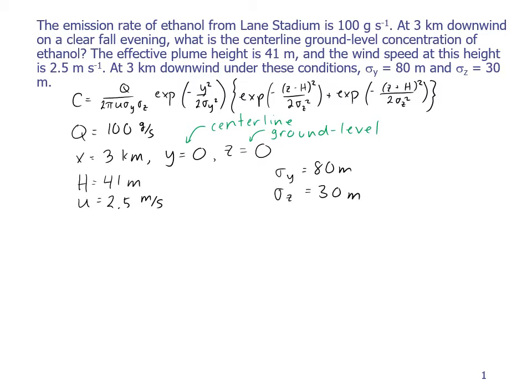Interestingly, X does not appear in the equation, but it's tied up in the sigma Ys and sigma Zs because those are actually given for a specific value of X. And as you go farther downwind, they'll increase as the plume is spreading out.